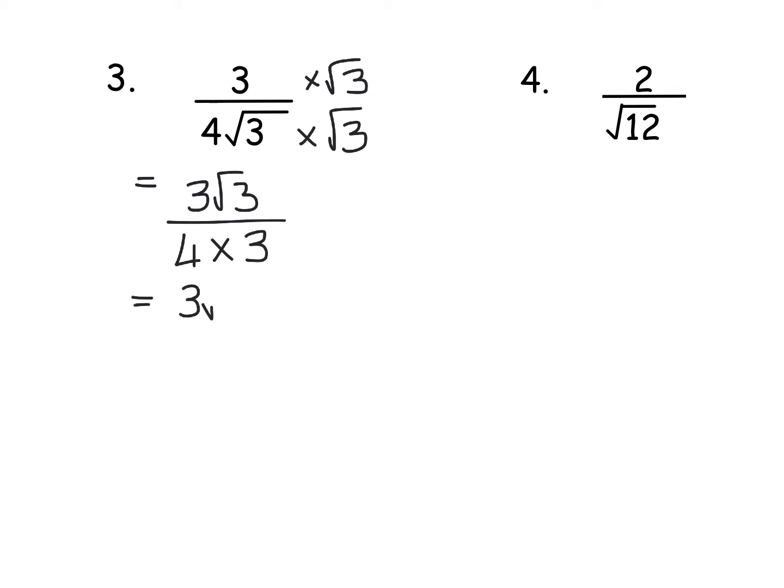So what we have is 3 root 3 over 12. Now some simplifying is going to come in here. Now all you can simplify is the number at the front of the surd. You can't do anything with the root 3.